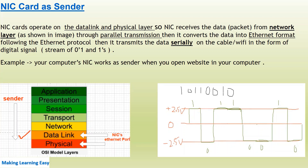As shown in the image, I have the OSI model here. The Data Link Layer is the second-to-last and directly interacts with the Network Layer. The NIC receives the packet from the Network Layer through parallel transmission, then converts the data into Ethernet format following the Ethernet protocol, and transmits the data serially on the cable or Wi-Fi in the form of a digital signal — a stream of zeros and ones. In the screenshot you can see what the digital signal looks like.